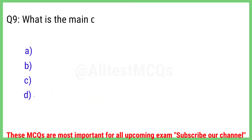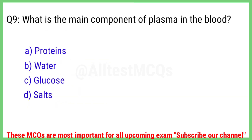Question 9. What is the main component of plasma in the blood? The right answer is option B: Water.